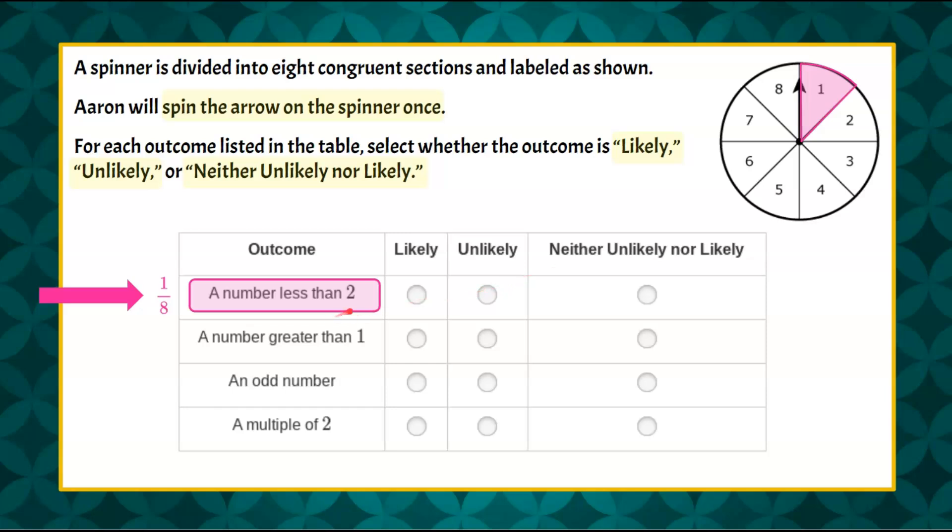So when we look at our answer choices, we can see that that is an unlikely expectation because there's eight possible outcomes and only one of those eight is a number less than two. So we're going to say unlikely.